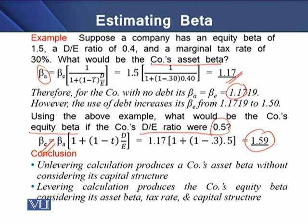The conclusion is that the unlevering computation produces a company's asset beta without considering its capital structure. When levering the computation for the target company's equity beta, we use the unlevered asset beta, the target company's tax rate, and the target company's capital structure — 0.5 in our example. In this way, we can determine a project's equity beta through the pure play method by unlevering and relevering the betas.